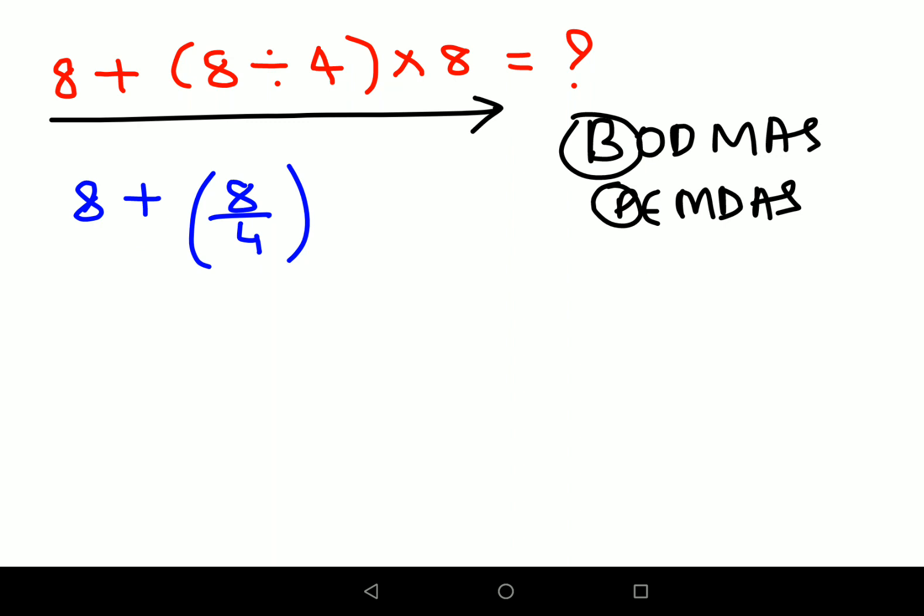Into, we have an into multiplication sign. So first, like I said, we will do the bracket first. So we will have 8 plus, and 8 upon 4 is 2. So we will have 2 into 8.